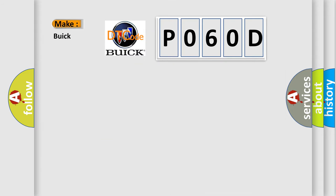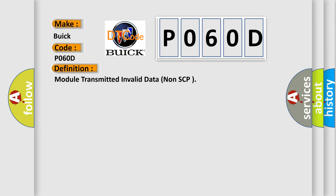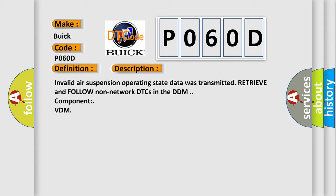So, what does the diagnostic trouble code P060D interpret specifically for Buick car manufacturers? The basic definition is Module transmitted invalid data non-SCP. And now this is a short description of this DTC code: Invalid air suspension operating state data was transmitted. Retrieve and follow non-network DTCs in the DDM component VDM.